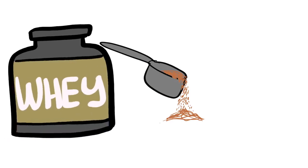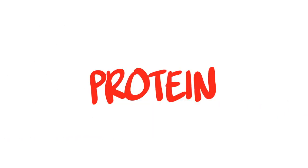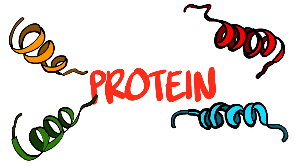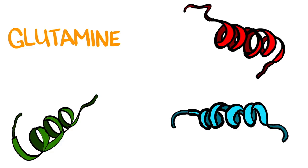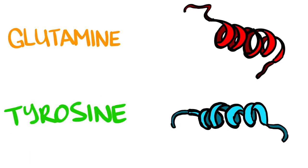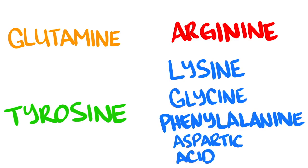So what's in this whey that makes it so special? The obvious stuff is the protein, and whey has quite a diverse amino acid profile. It contains amino acids such as the common glutamine, the dopamine aid tyrosine, nitric oxide booster arginine, and others such as lysine, glycine, phenylalanine, and aspartic acid.